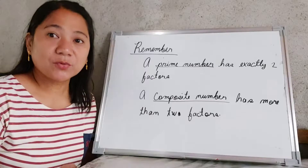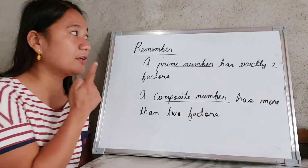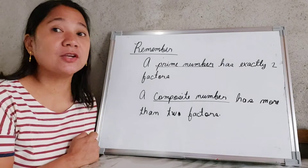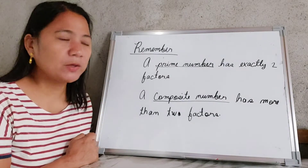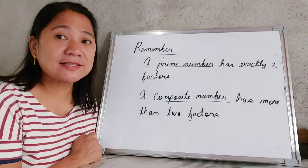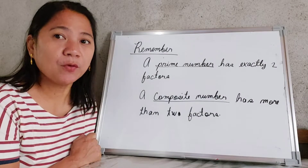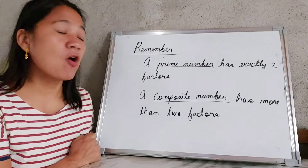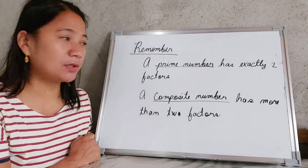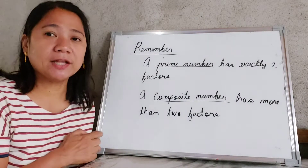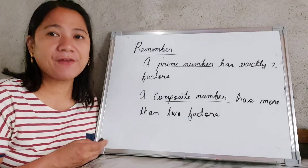Here are two important things to remember: a prime number has exactly 2 factors, while a composite number has more than 2 factors.